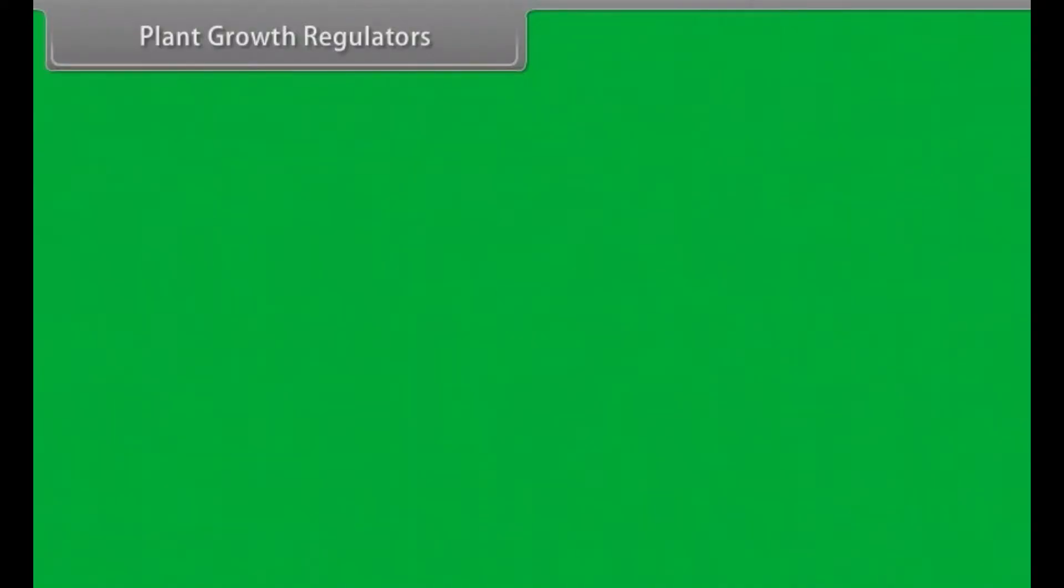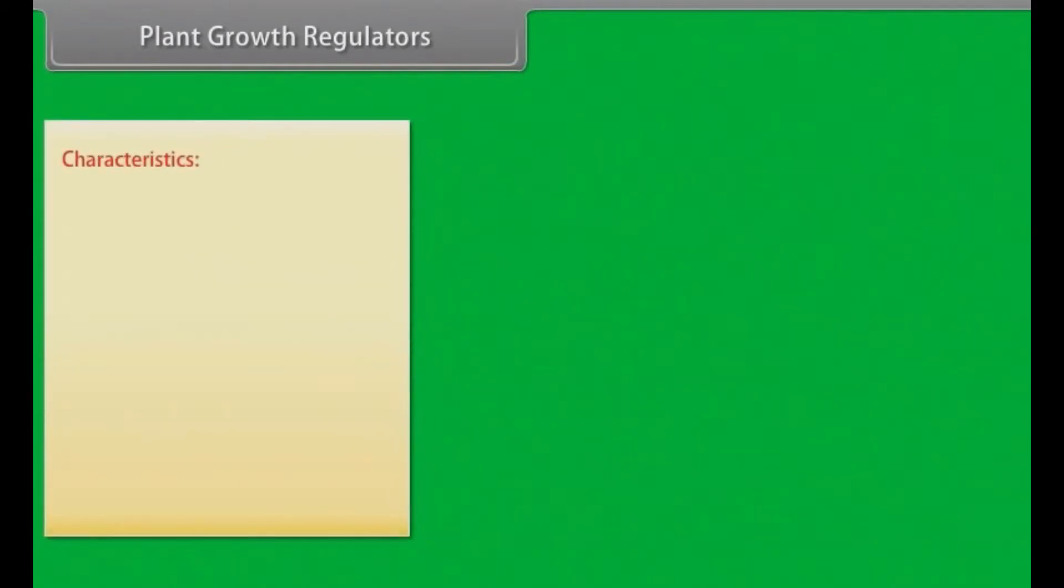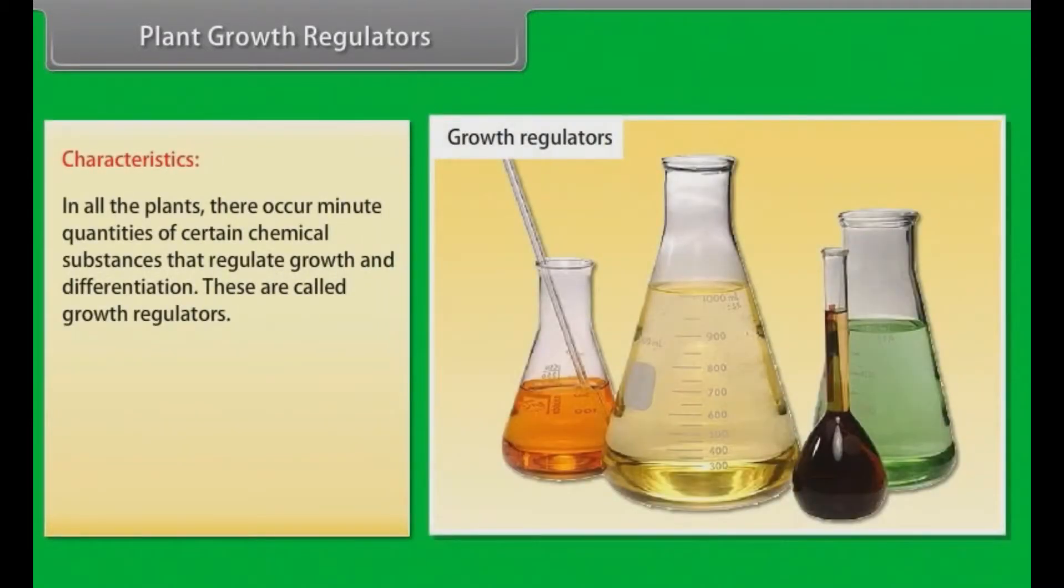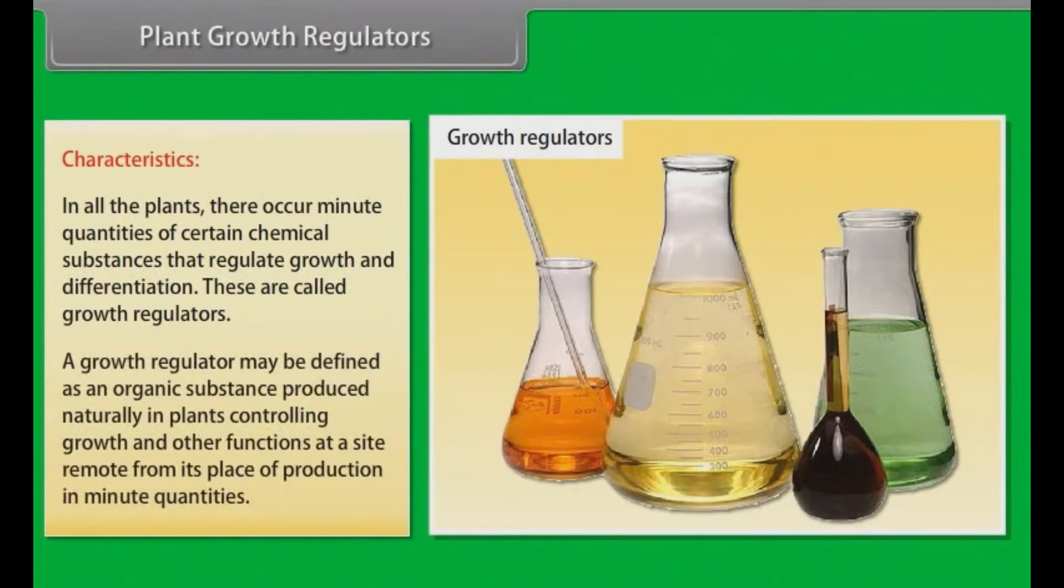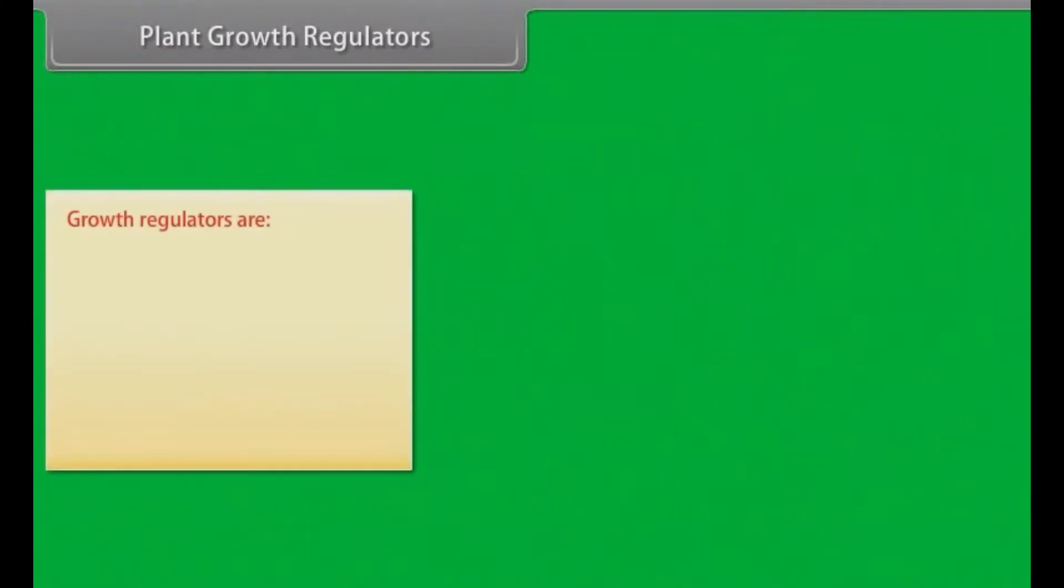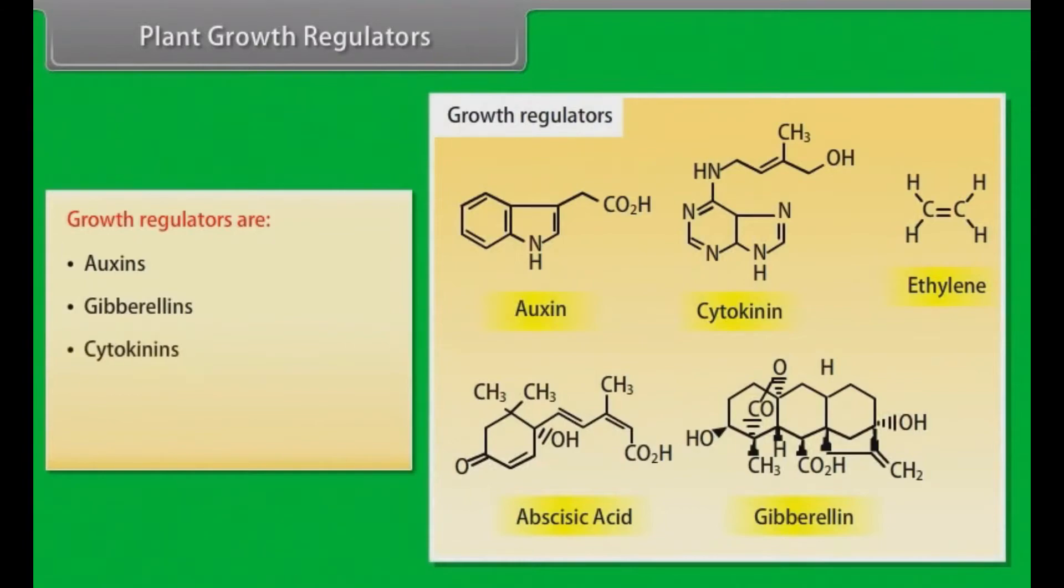Plant growth regulators. Characteristics: in all the plants, there occurs minute quantities of certain chemical substances that regulate growth and differentiation. These are called growth regulators. A growth regulator may be defined as an organic substance produced naturally in plants, controlling growth and other functions at a site remote from its place of production in minute quantities. These are auxins, gibberellins, cytokinins, ethylene and abscisic acid.